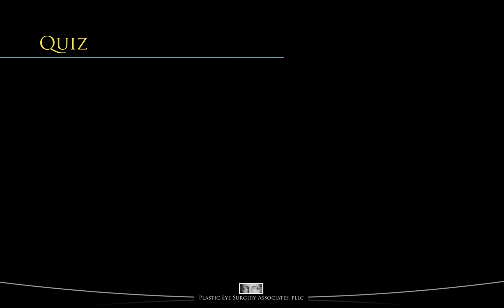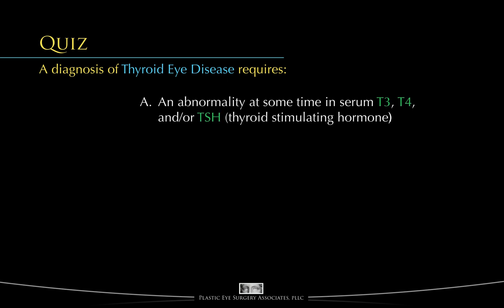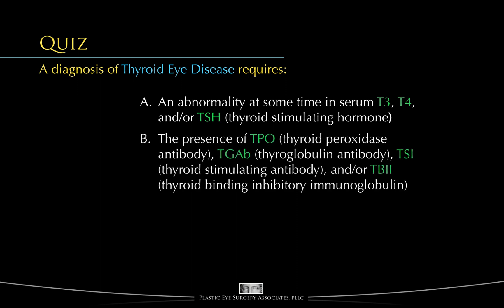Let's take a little quiz. A diagnosis of thyroid eye disease requires: (a) an abnormality at some time in serum T3, T4, and/or TSH; (b) the presence of TPO (thyroid peroxidase autoimmune antibody), TGAB (thyroglobulin autoimmune antibody), TSI (thyroid stimulating autoimmune antibody), and/or TBII (thyroid binding inhibitory autoimmune immunoglobulin); (c) either A or B, or both; or (d) neither. The answer is neither. No blood test makes the diagnosis — it is a clinical diagnosis alone.